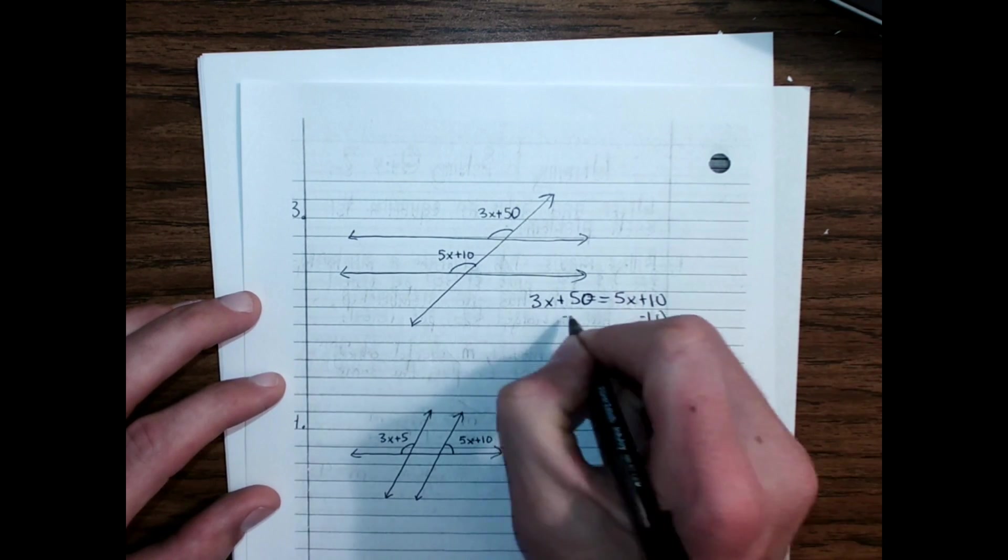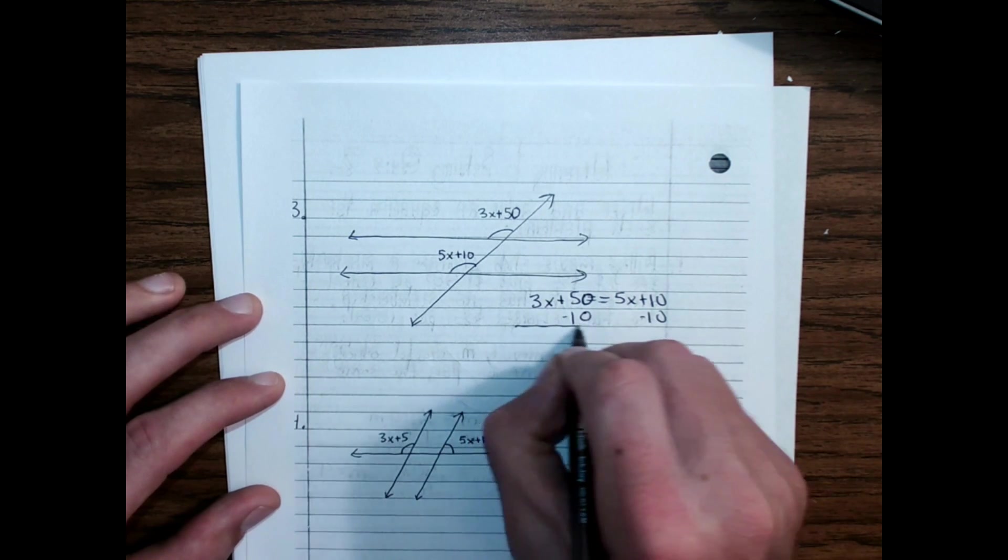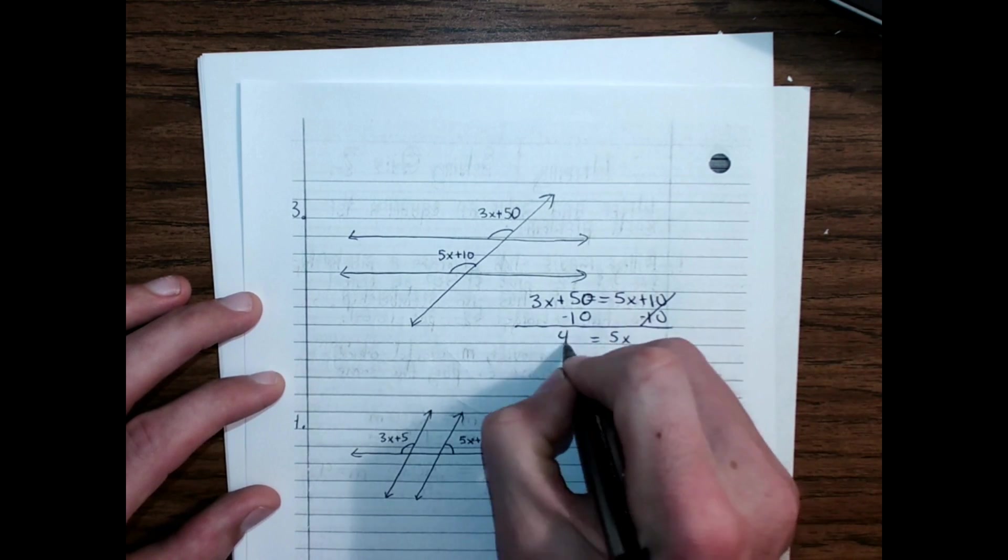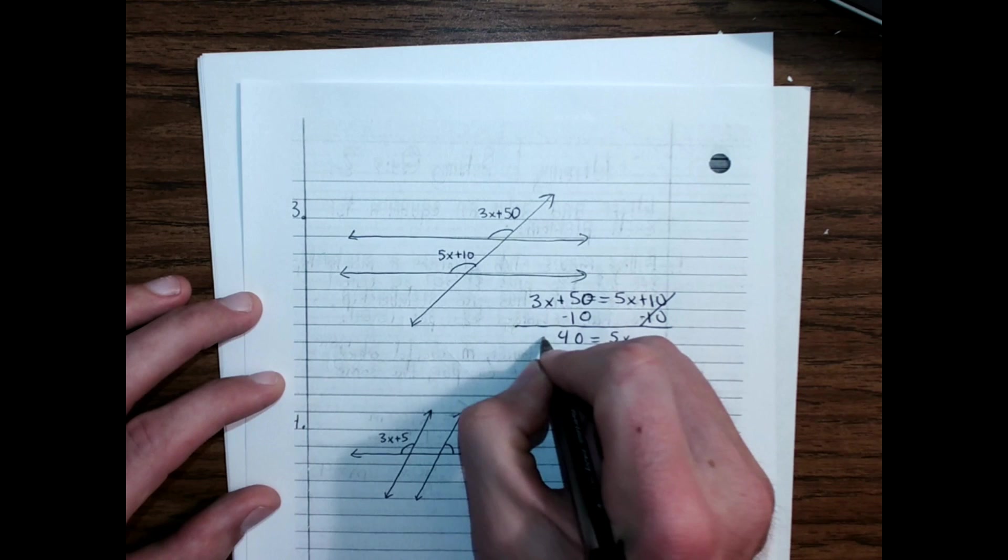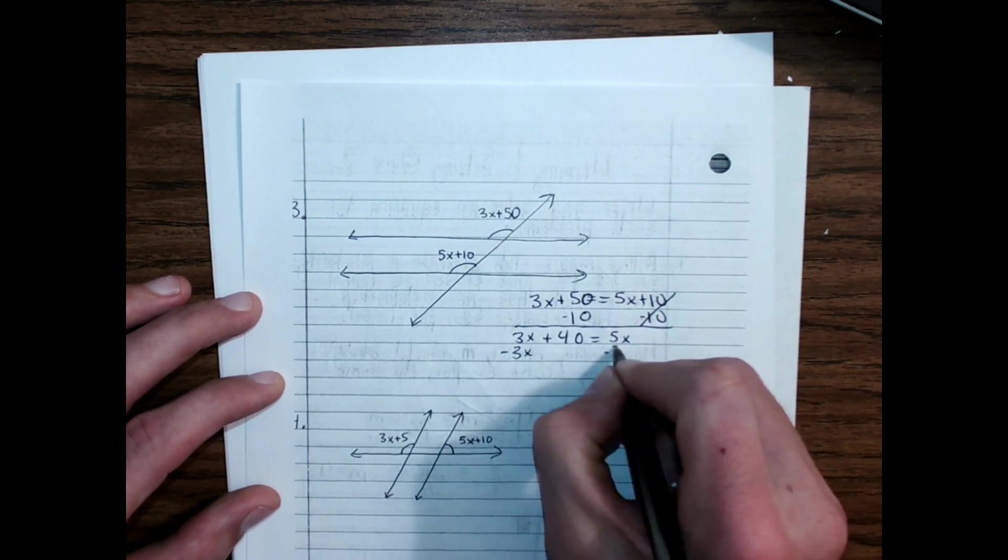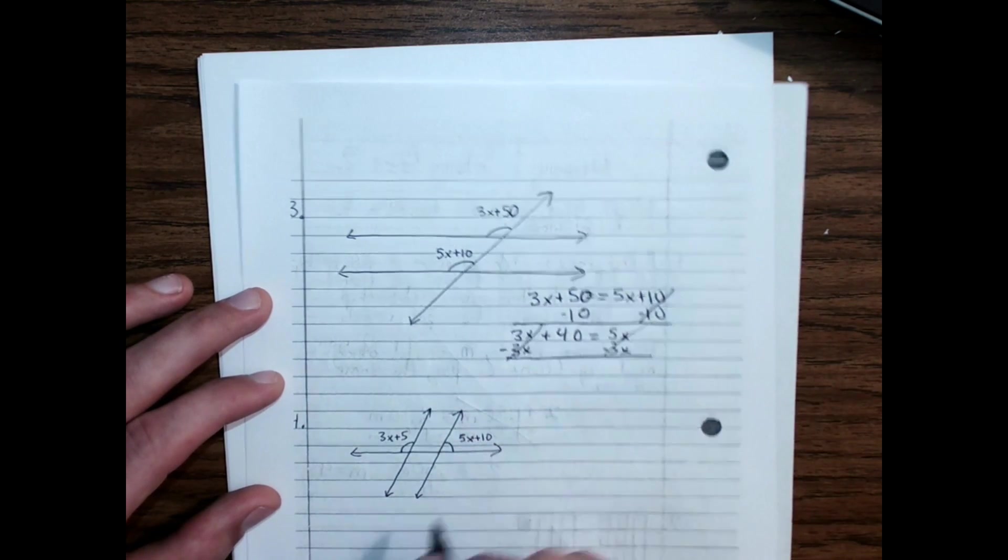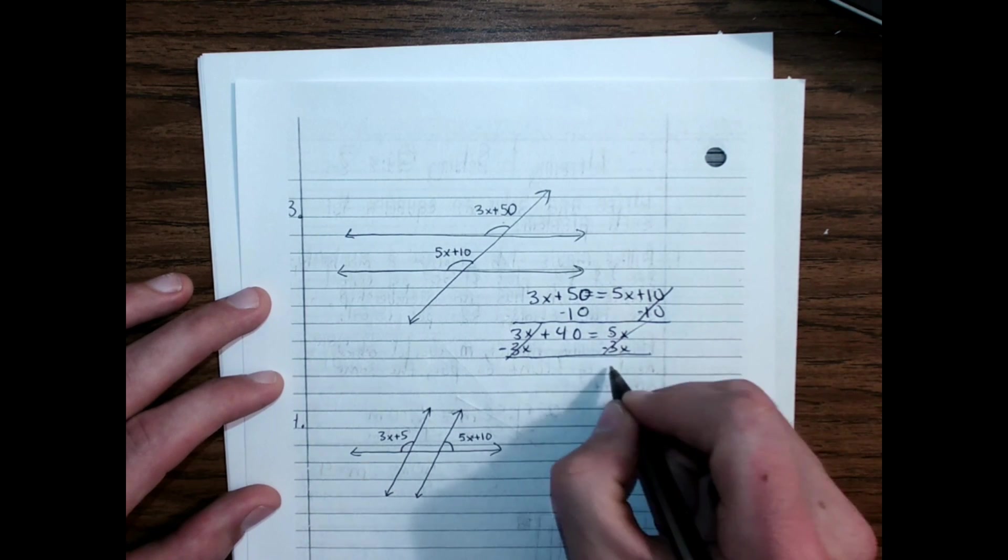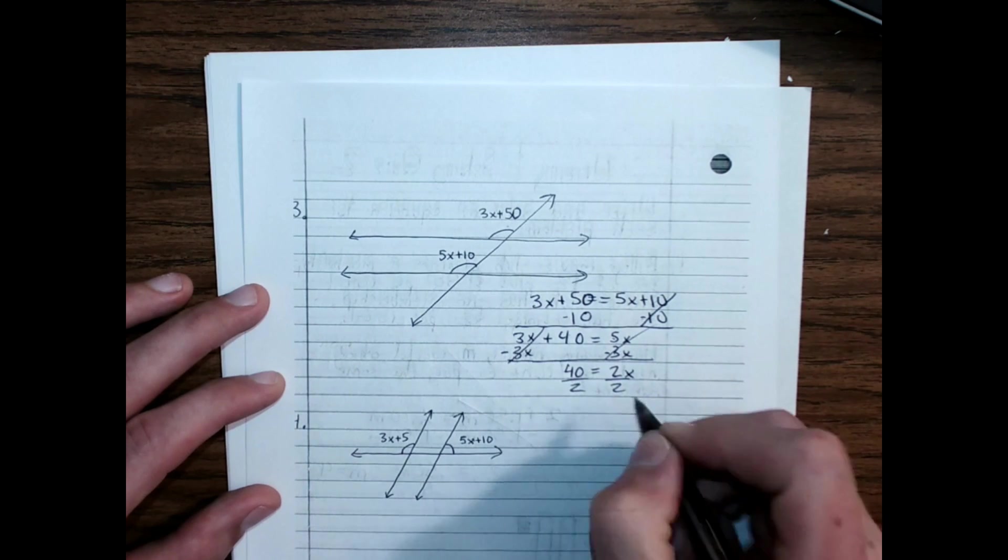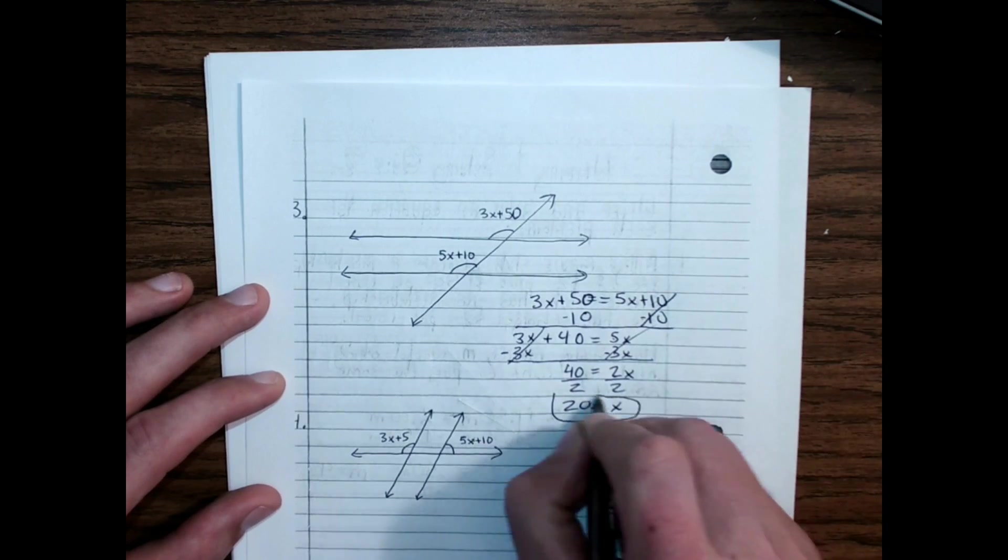Subtract 10 from both sides. 0 pair. 5X. 50 minus 10 is 40, and it's a positive 40. The 3X is still over here. Let's cancel that one. 0 pair. And those don't make a 0 pair, but 5 minus 3 is 2. So 2X equals 40. Divide both sides by 2. And I keep writing quizzes where X is equal to 20.